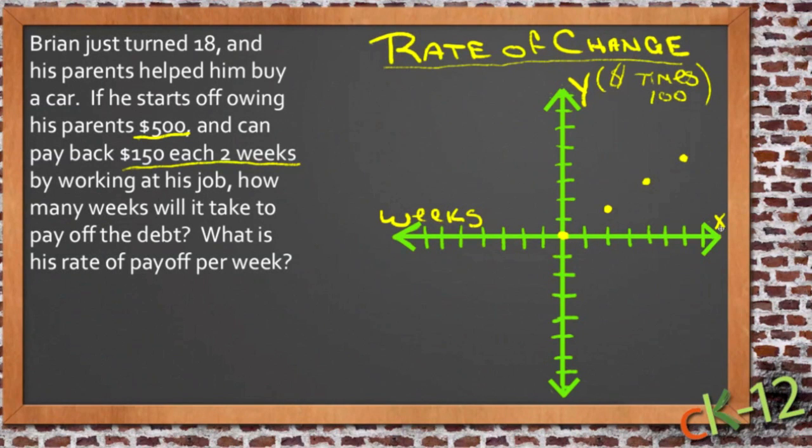And if you were to go another two weeks, he'd be out here at $600. But of course, then he would have already paid off more than he needed to. So somewhere around here, our line ceases to have meaning because he would have paid off his parents and not had to keep paying any more value. But what we're looking for is what his rate of payoff is per week and how many weeks it actually takes him to get to that point.